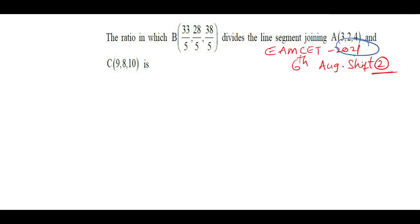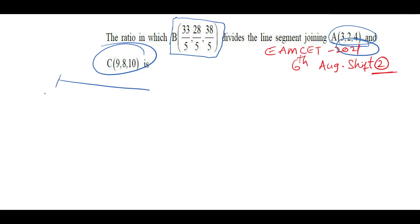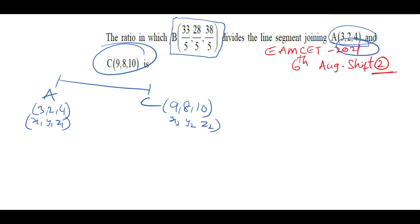This is MHT-CET 2021, 6th August, Shift 2 question. The ratio in which the point B(33/5, 28/5, 38/5) divides the line segment joining A(3, 2, 4) and C(9, 8, 10) is to be found. The line segment AC is given. Point A is taken as (x1, y1, z1) and point C is taken as (x2, y2, z2). Now we find the ratio in which point B divides the segment.